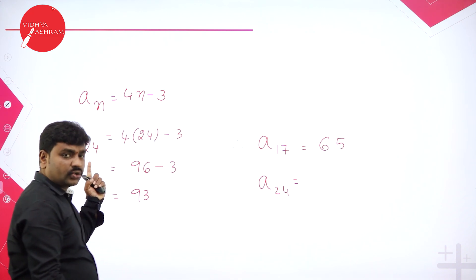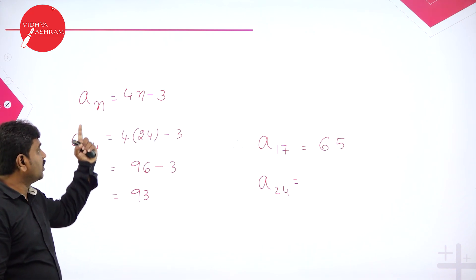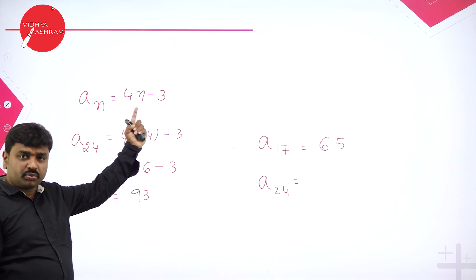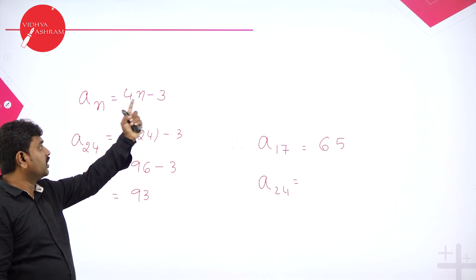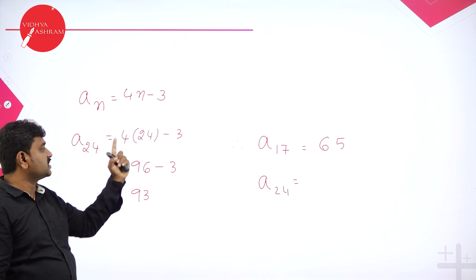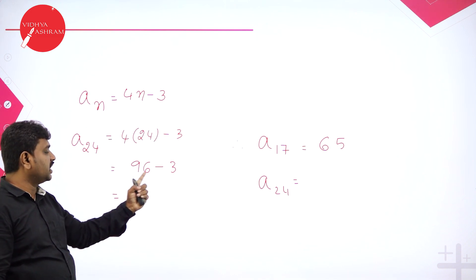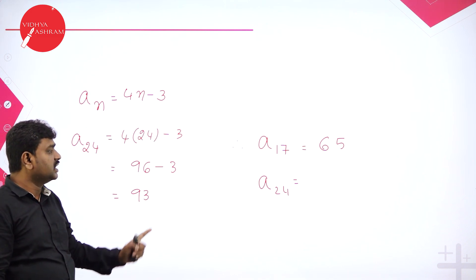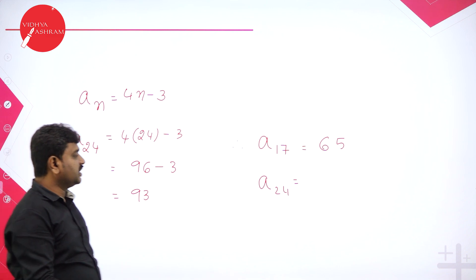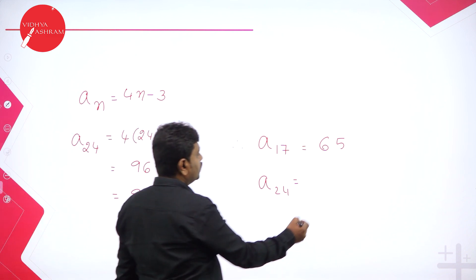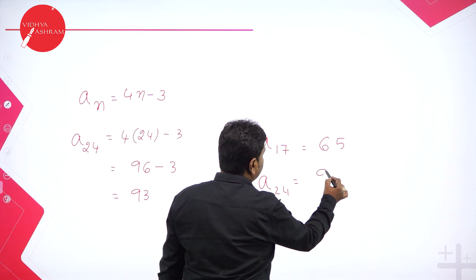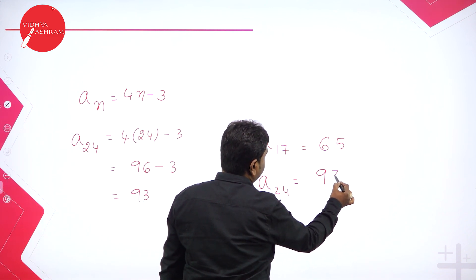They want you to calculate A24. In the formula, in the place of N put 24: 4 into 24 minus 3. That is 96 minus 3, which gives you 93. So both values, A17 = 65 and A24 = 93, are confirmed.